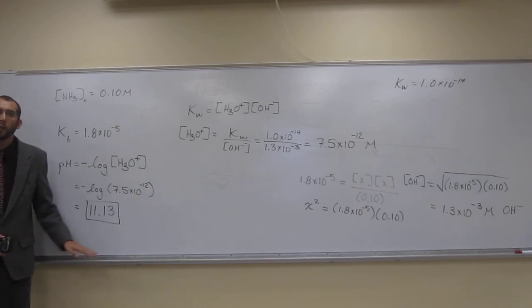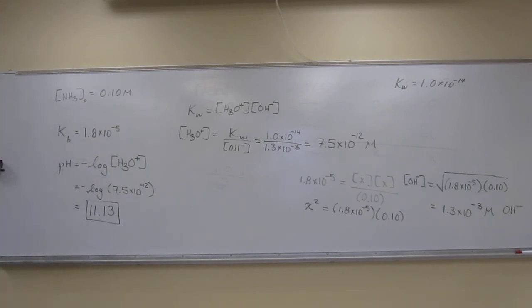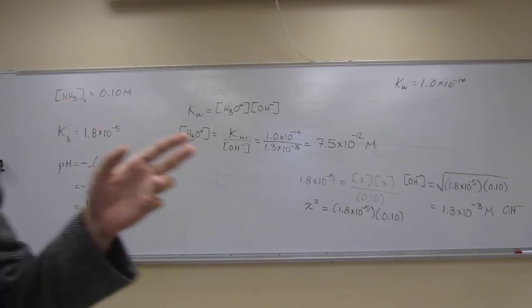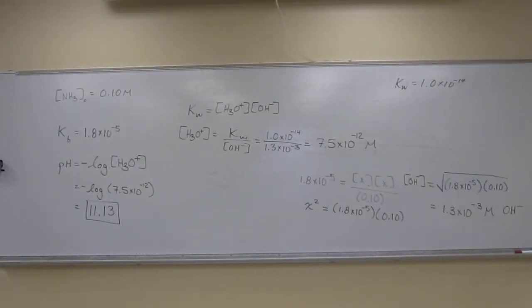Does everybody understand why it should be, like, just qualitatively higher than 7, right? Any questions on this one?